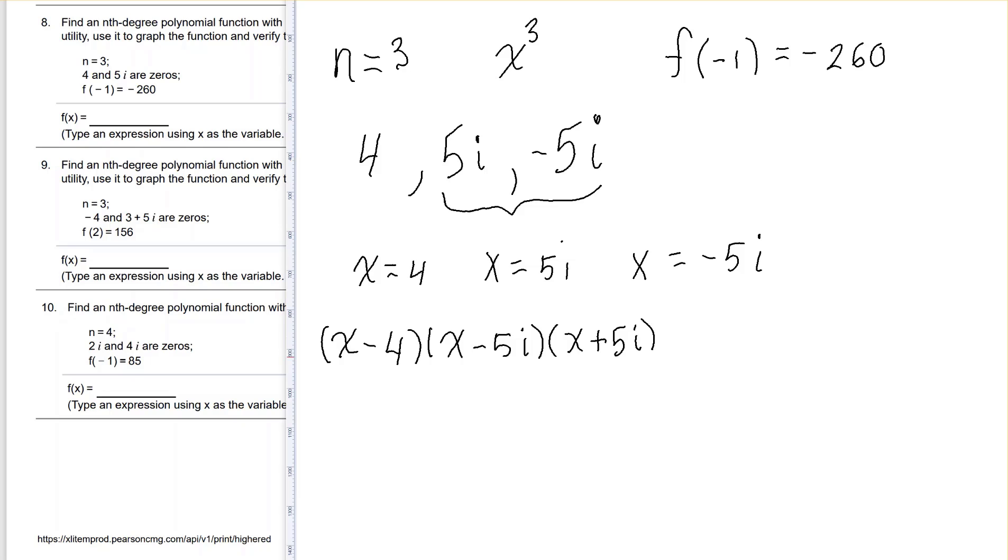So if I multiply these, I'm going to do the conjugates first. So that's going to give me x squared. And look, the plus 5i x and the minus 5i x are going to add to 0. So that's minus 25i squared.